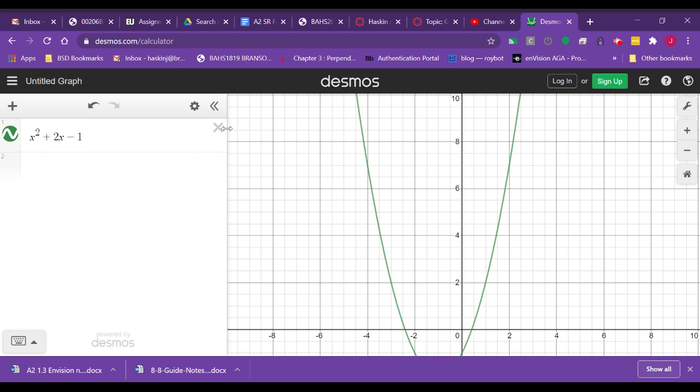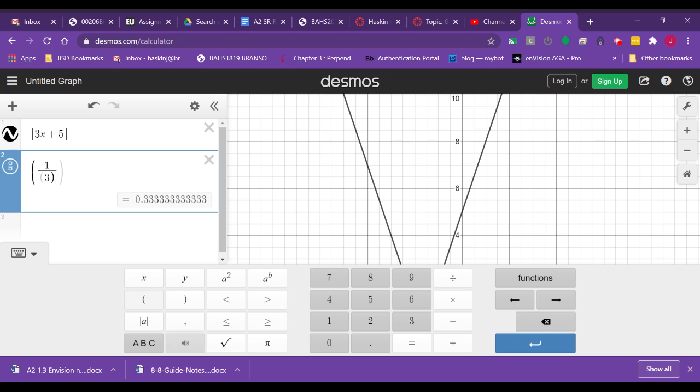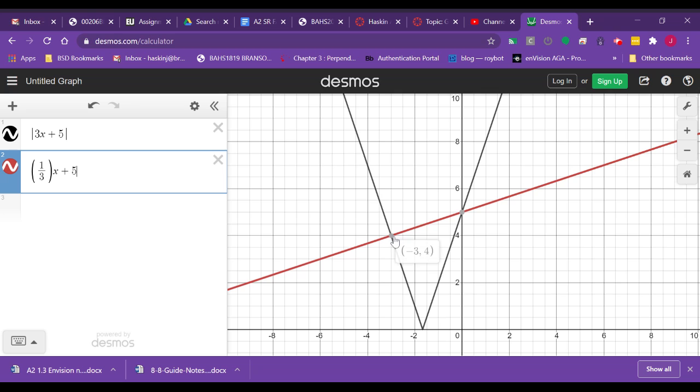The last one I had on our notes, so I could go here and clear these, was the absolute value of 3x plus 5. And again, I can just click on that to make my keyboard go away, and I see it's x equals negative 3, and at x equals 0, where these two graphs cross.